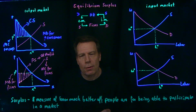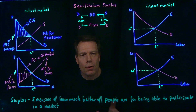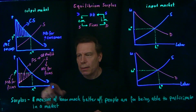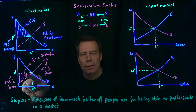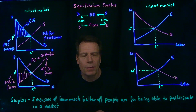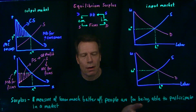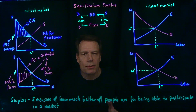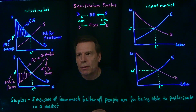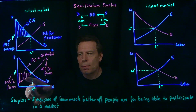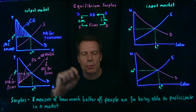If we use the long-run supply curve instead, because of entry and exit of firms, the long-run market supply curve is perfectly horizontal — flat at the market price. So this triangle would disappear entirely; there would be no long-run producer surplus and no long-run profit. That's because entry and exit drive profits for firms in competitive markets to zero. But in the short run, we get this producer surplus triangle that equals short-run profit.